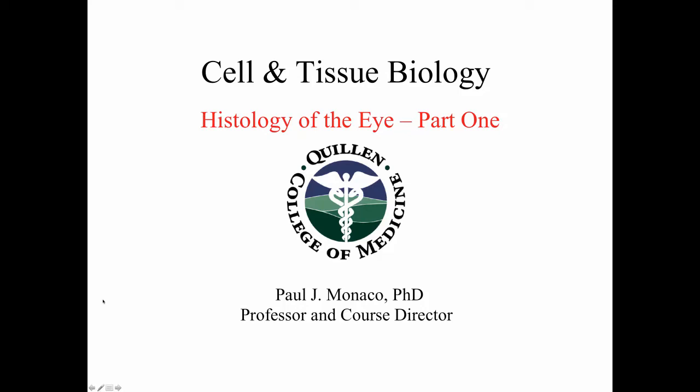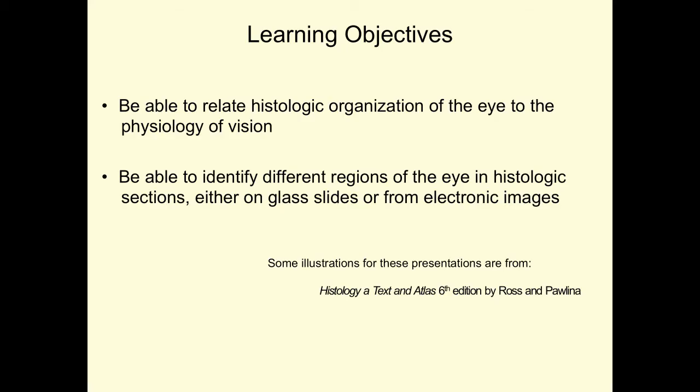This is the first of three podcasts that deal with the eye. In this first podcast, we'll give a general overview. In the second podcast, we'll talk about the anterior portions of the eye. And in the third podcast, we'll talk about the lens and the retina. By your learning objectives, you should be able to relate histological organization of the eye to physiology of vision and identify different regions of the eye in histologic sections, either from glass slides or from electronic images.